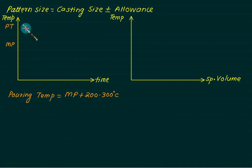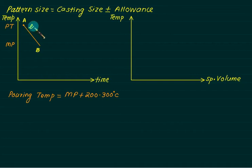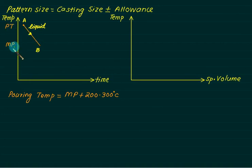As time increases, temperature gets reduced. From point A to point B, what phase is it? Liquid phase — no phase change occurs. So the first temperature drop is from pouring temperature to melting temperature, also called the freezing temperature. During this we have a sensible heat loss.